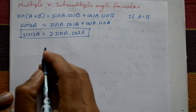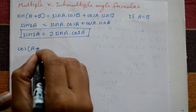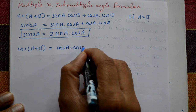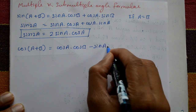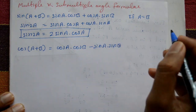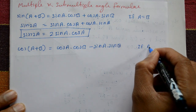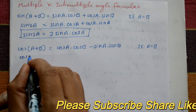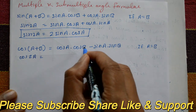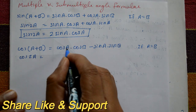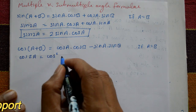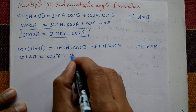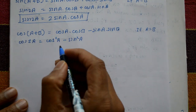Next, we have already proved cos(a+b) equals cos a into cos b minus sin a into sin b. Now take b equal to a. So cos(a+a) is cos 2a. With b equal to a: cos a into cos a is cos squared a, minus sin a into sin a is sin squared a. So cos 2a equals cos squared a minus sin squared a.